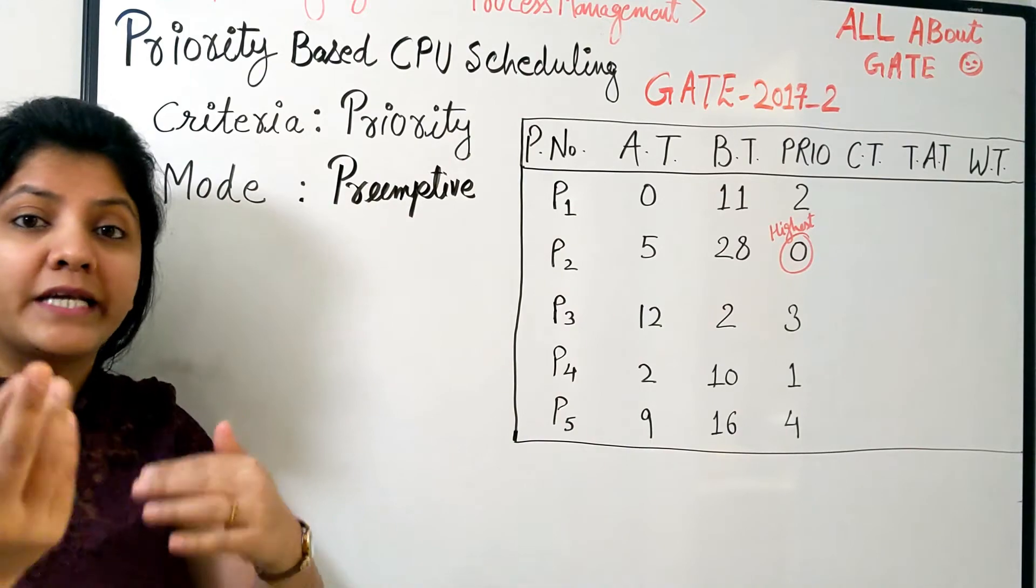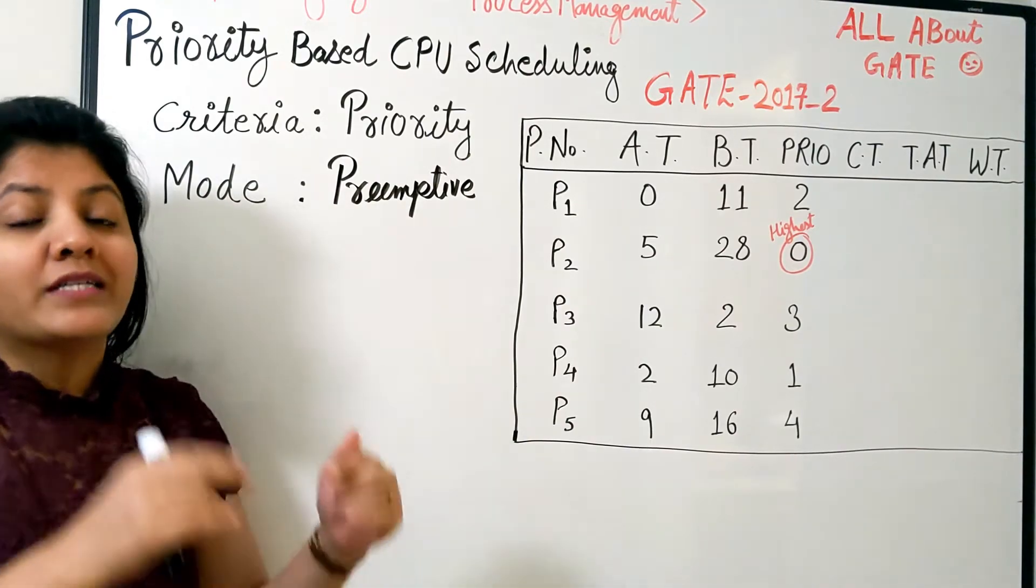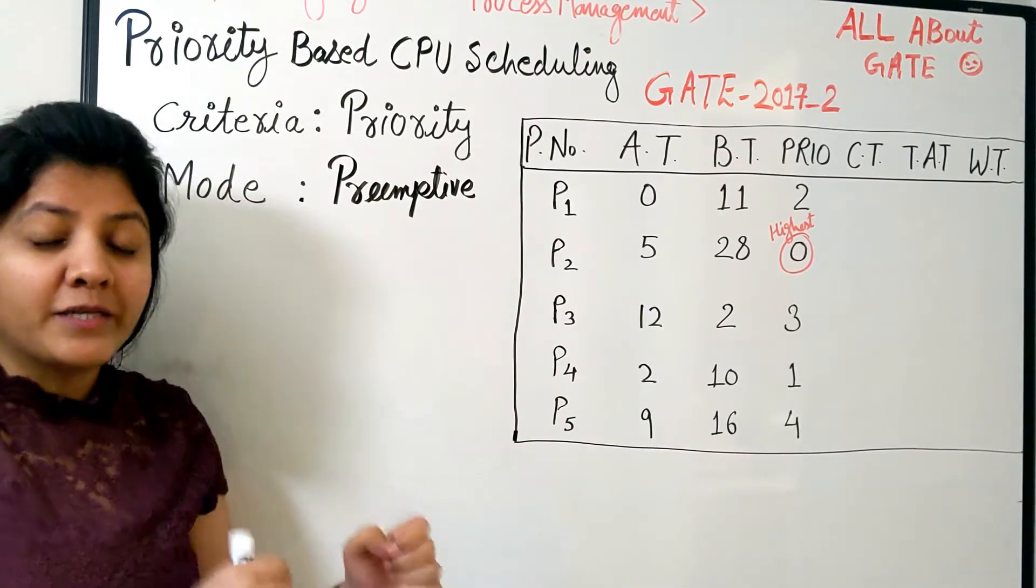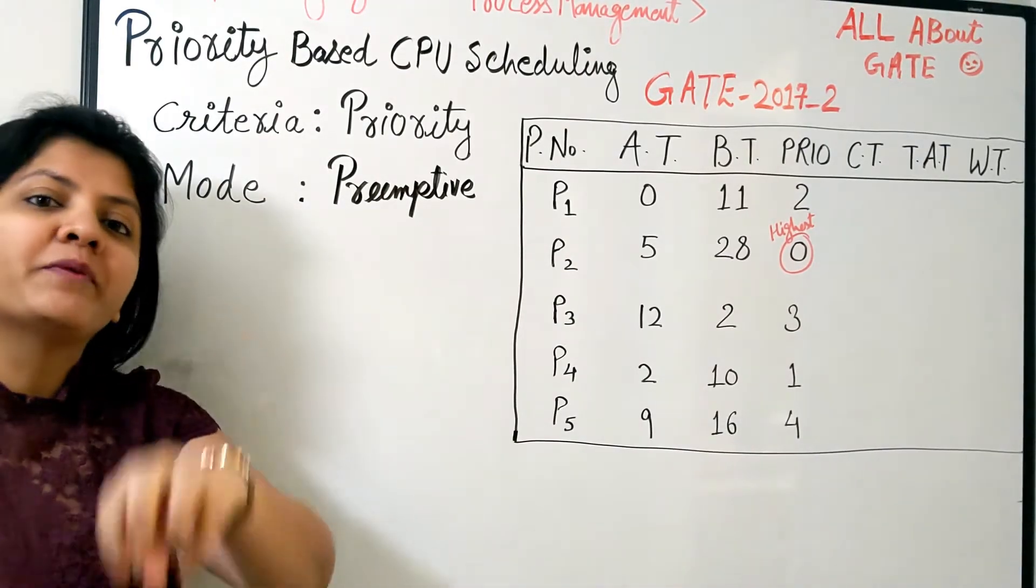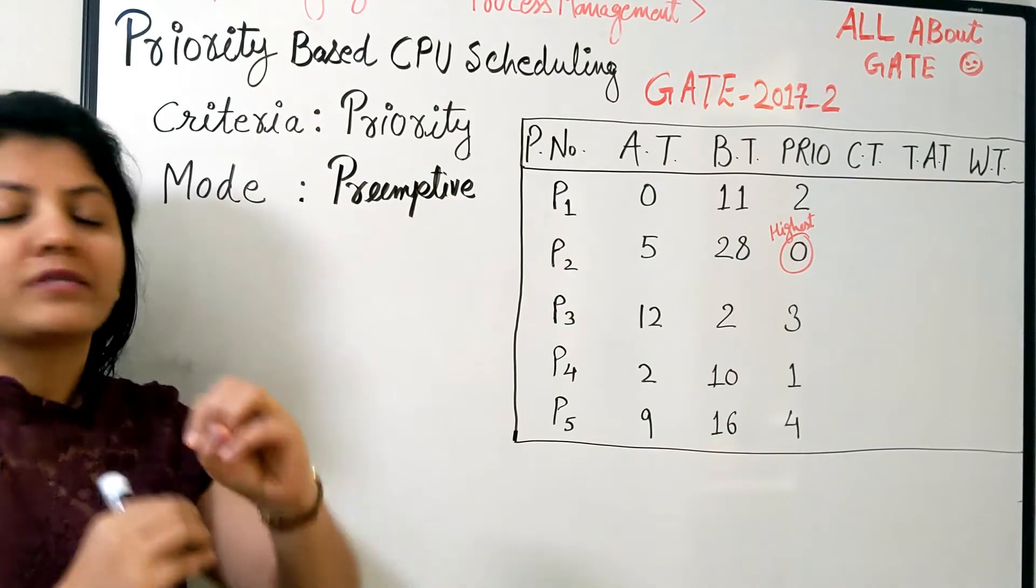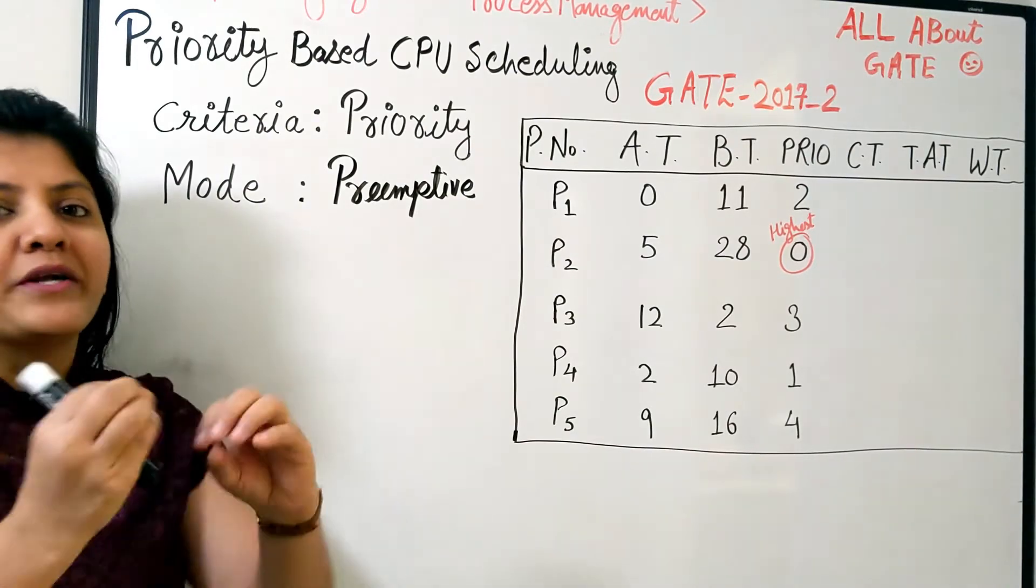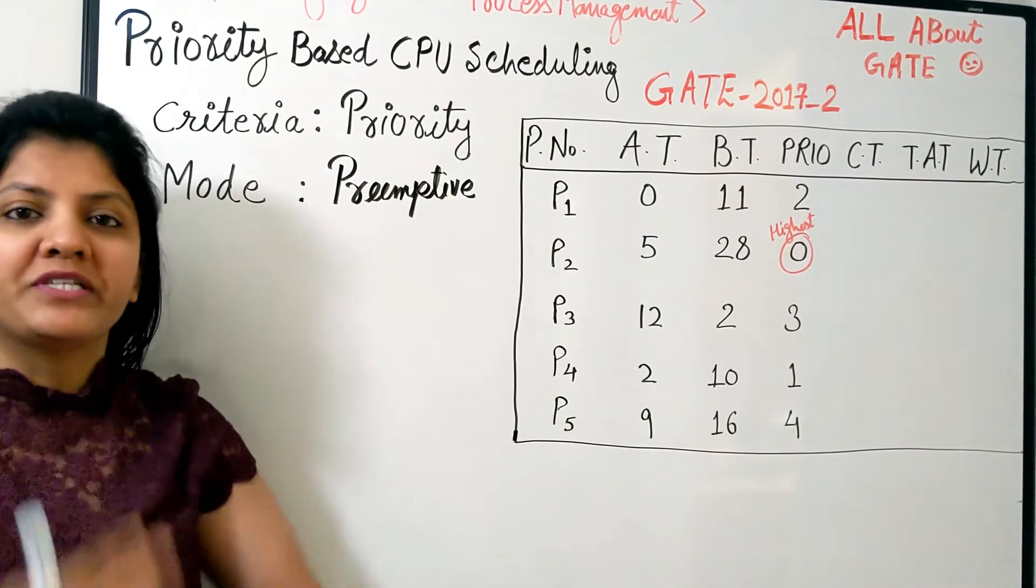At least when you are running a process, if any other process of higher priority arrives in your ready queue, then your short-term scheduler or CPU scheduler is going to pick that process, put that on the CPU, and the one who is running will be kept back into the ready queue. That's what preemptive means - it's going to involve a context switch immediately.